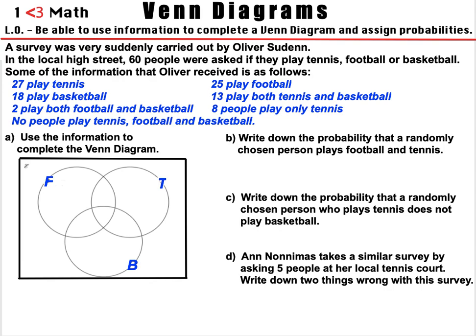A survey was carried out by Oliver Sudden in the local high street. 60 people were asked if they play tennis, football, or basketball. Some of the information received is as follows: 27 people play tennis, 25 play football, 18 play basketball, 13 play both tennis and basketball, 2 play both football and basketball, 8 play only tennis, and no people play tennis, football, and basketball.